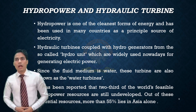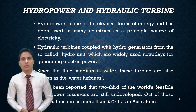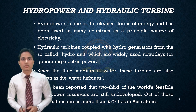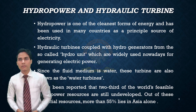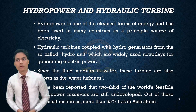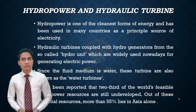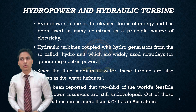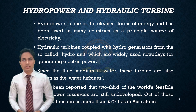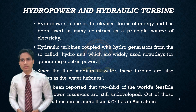Hydro power and hydraulic turbine. Hydro power is one of the cleanest forms of energy and has been used in many countries as a principal source of electricity. Hydraulic turbines coupled with hydro generators form the so-called hydro unit, which are widely used nowadays for generating electric power. Since the fluid medium is water, these turbines are also known as water turbines. It has been reported that two-thirds of the world's feasible hydro power resources are still undeveloped. Out of these potential resources, more than 55% lies in Asia alone.